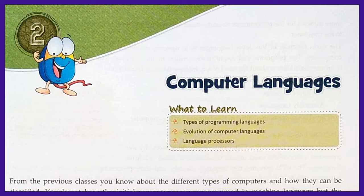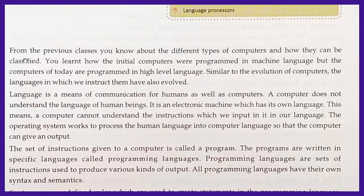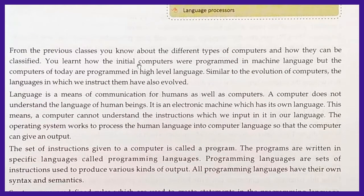In this second chapter on computer languages, you are going to learn about the types of programming languages, the evolution of computer languages, and language processors. From the previous classes, you know about the different types of computers and how they can be classified. You will learn how the initial computers were programmed in machine language and how they are programmed in high-level language.